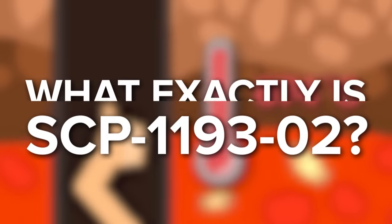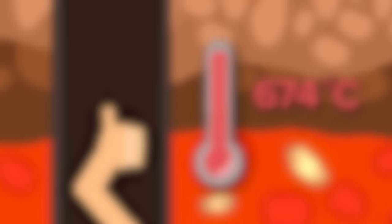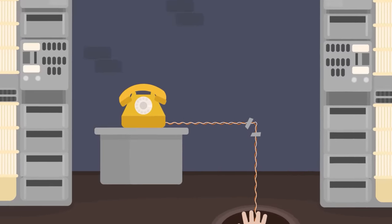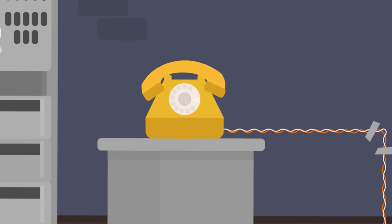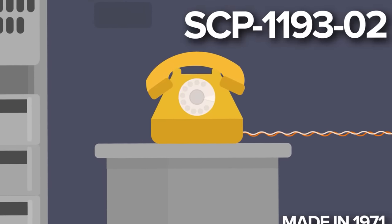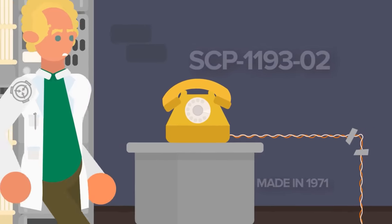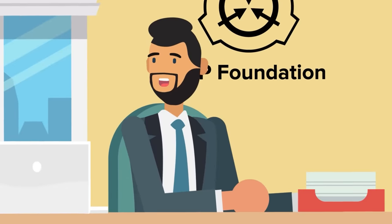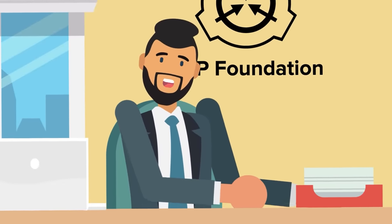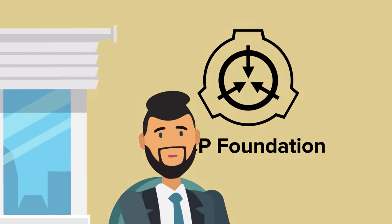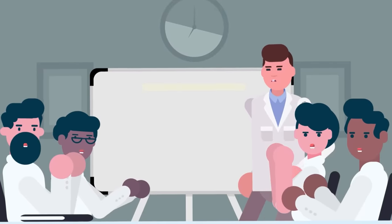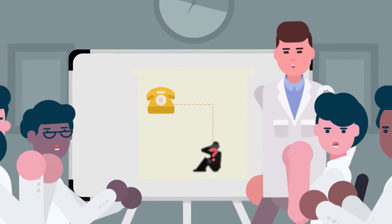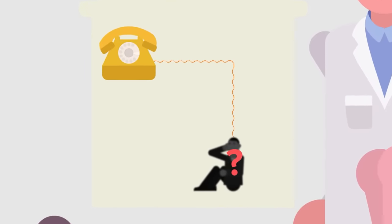But what exactly is SCP-1193-02? SCP-1193-02 is a GPO-746 rotary telephone with a topaz yellow plastic exterior manufactured in 1971. Because of the physical dimensions of the phone, it is too large to have been delivered from below via the borehole, so we know that SCP-1193-01 didn't put it there. The working theory of Foundation researchers assigned to the 1193 case is that the phone was installed here specifically to facilitate communications with the trapped SCP-1193-01.